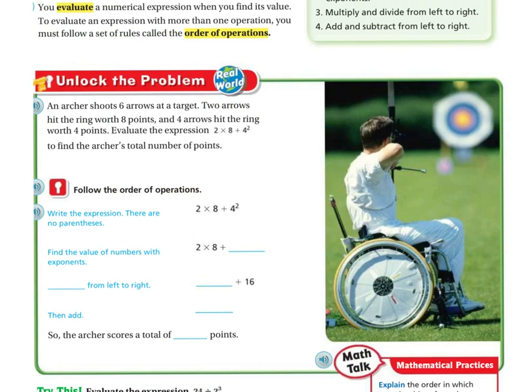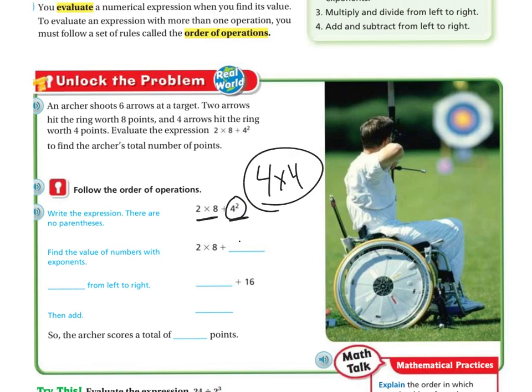Following the order of operations, there are no parentheses, so I skip to the second step. There is an exponent: 4 to the second power. Yesterday we did those — the base is 4 and I'm multiplying it 2 times, so 4 times 4 is 16. Now I rewrite the problem as 2 times 8 plus 16.